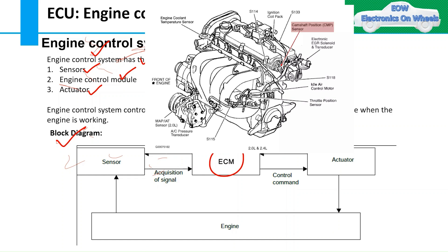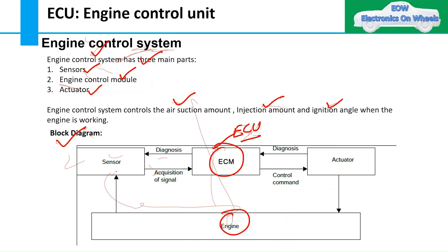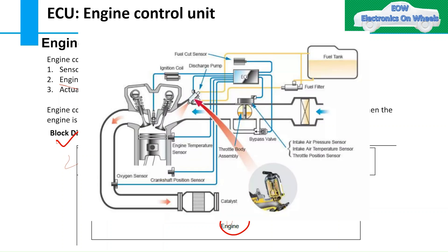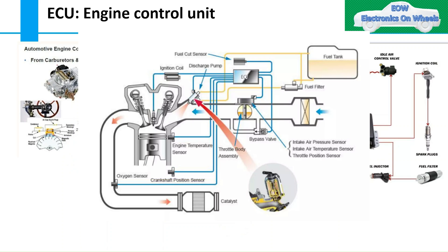Suppose this is the engine. The input is given to the sensor from the engine, then these inputs go to the ECM in the form of signal acquisition. The ECM will process those signals, make a decision, and give commands to the actuator. The actuator provides the control output — for example, if you want to operate a throttle motor, it takes the signal from the sensor into the ECM and then drives the motor, controlling the amount of fuel injection.